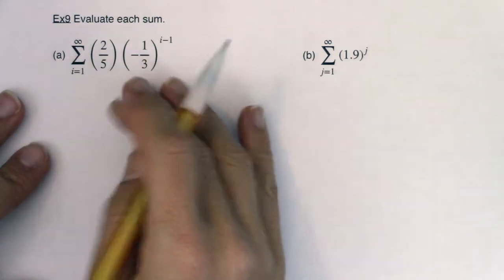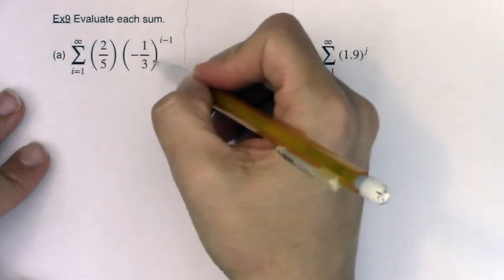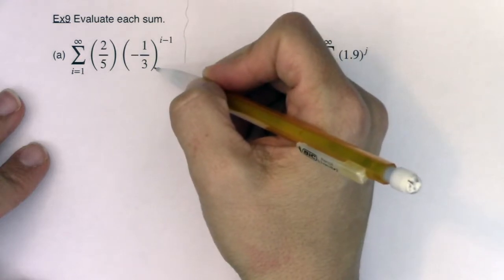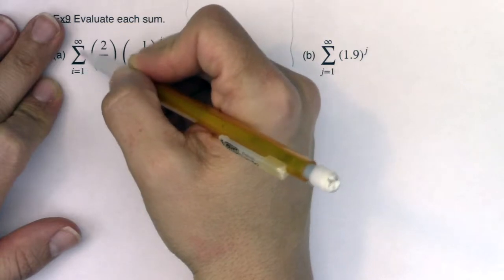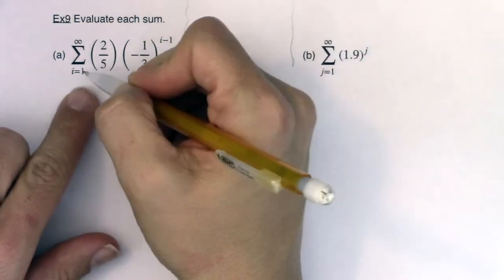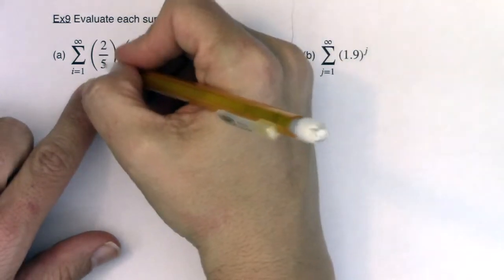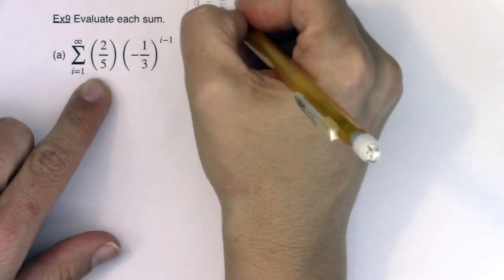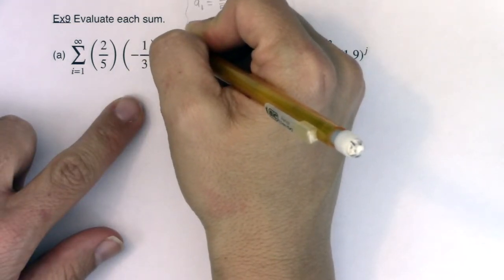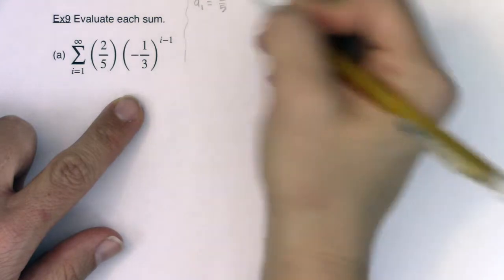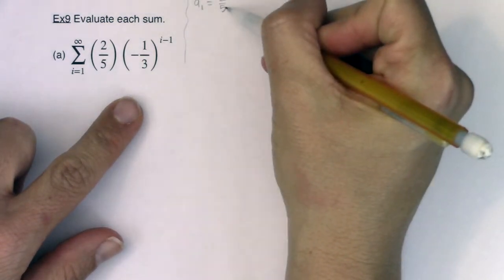Let's talk about why these are geometric. This is a geometric sequence because of the summation sign here — it turns into a series. If i equals 1, the first term would be 2/5. Well, 1 minus 1 is 0, and negative 1/3 to the 0 is just 1, so a sub 1 is 2/5. That'll wind up being important once we go through the infinite sum formula.